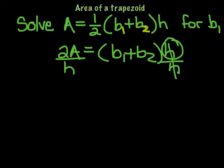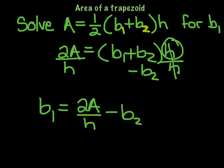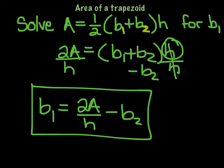And if I want to solve for b1, all I need to do is move the b2. So I've got b1 equals 2A over h. And then we took away b2. And that is that.